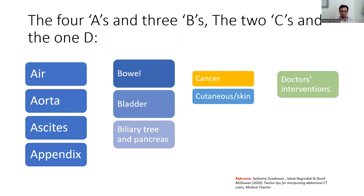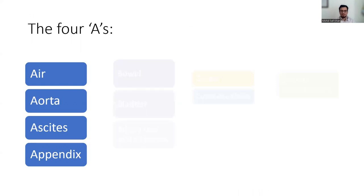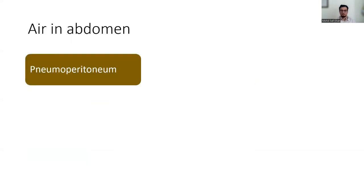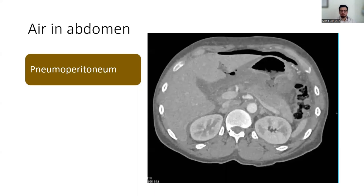First, look for the four A's. The first A is air — specifically any abnormal air collection inside the abdominal cavity, such as pneumoperitoneum or intramural gas bubbles, and fluid-gas levels within collections. Pneumoperitoneum is free gas in the abdominal cavity and is a sign of perforation, commonly associated with emergency surgical situations.